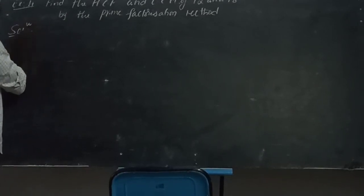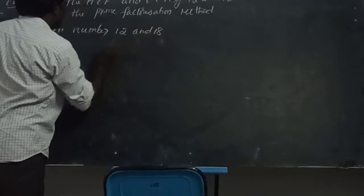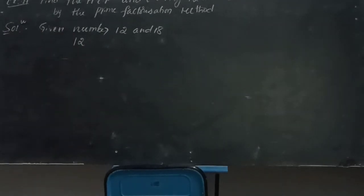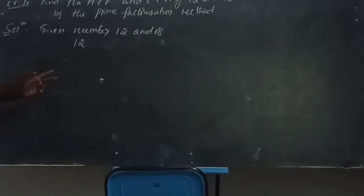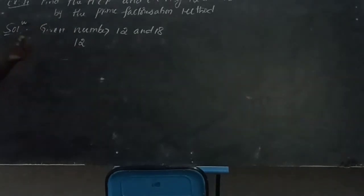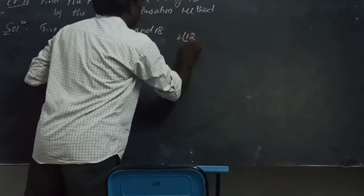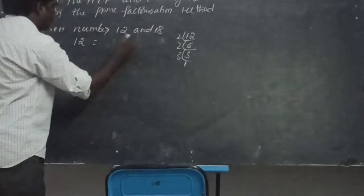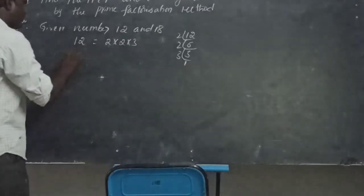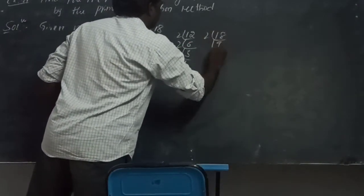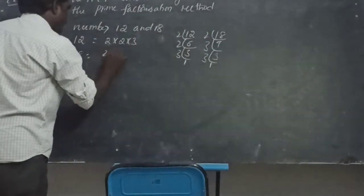First, write the given numbers in prime factorization form. The number can be written as a product of powers of prime numbers. The given numbers are 12 and 18. For 12, using the division method: 12 divided by 2 is 6, 6 divided by 2 is 3, 3 divided by 3 is 1. So 12 is equal to 2 into 2 into 3. For 18: 18 divided by 2 is 9, 9 divided by 3 is 3, 3 divided by 3 is 1. So 18 is equal to 2 into 3 into 3.